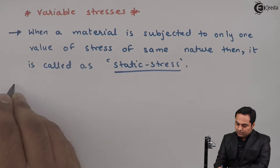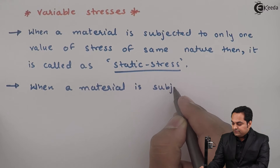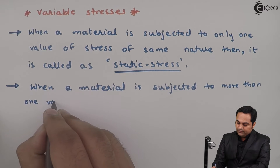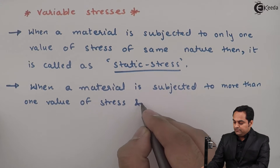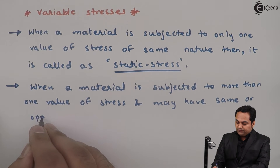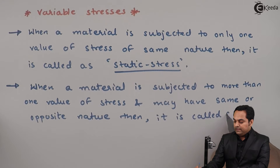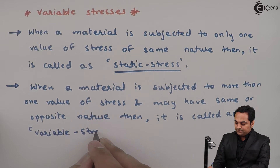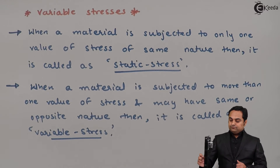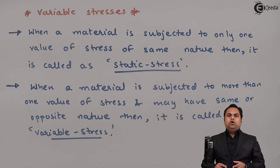When a material is subjected to more than one value of stress and may have the same or opposite nature, then it is called variable stress. So the definition of variable stress is: when a material is subjected to more than one value of stress and that stress may be of the same nature or it can be of opposite nature.